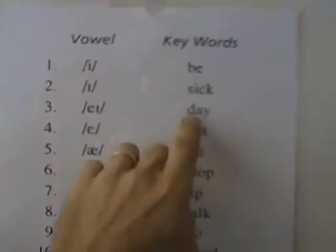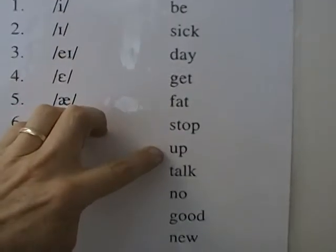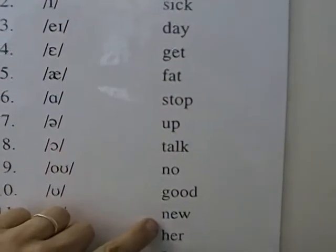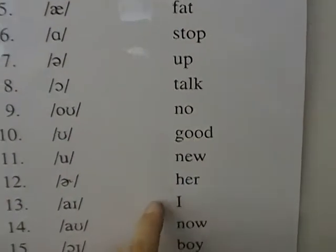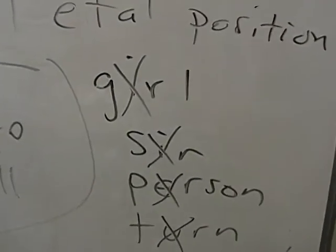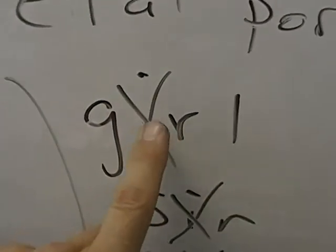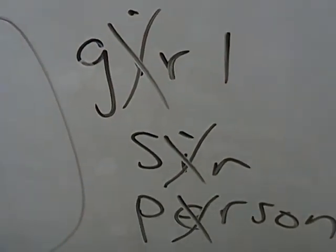Right, get all these like: be, sick, day, get, fat, stop, up, talk, no, good, new. This is the silent one - 'her'. The sound with 'her', see - this is 'girl'. You don't say the I - 'sir', 'person', and 'turn'.